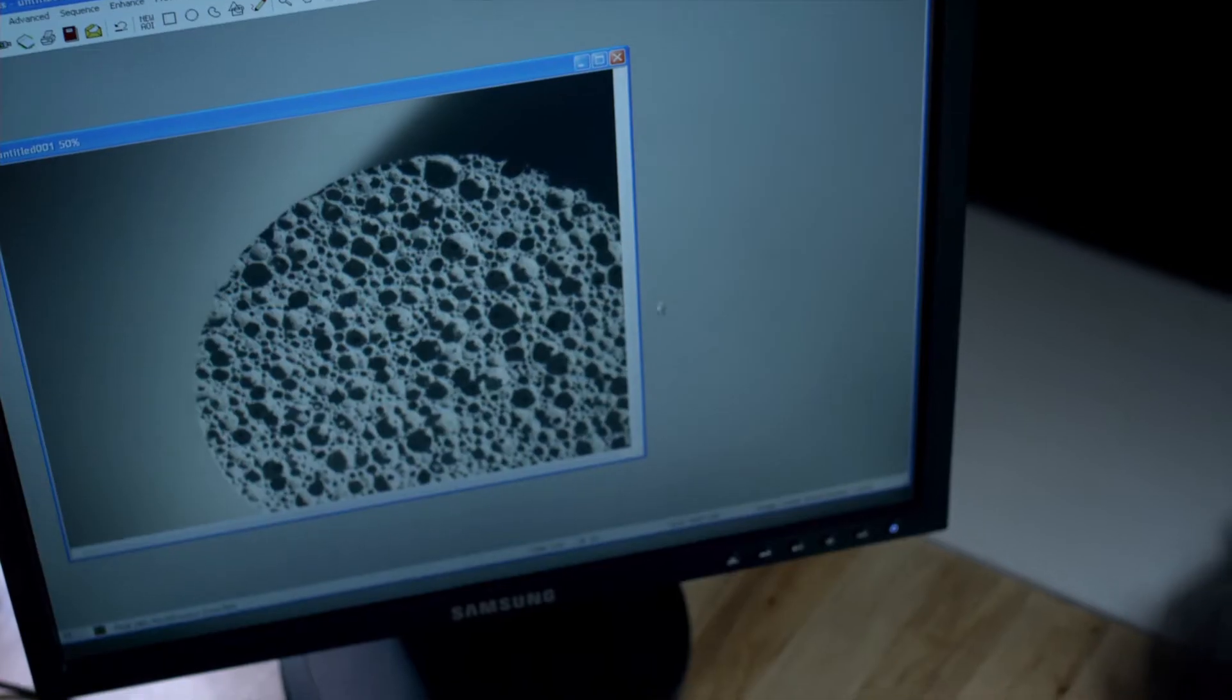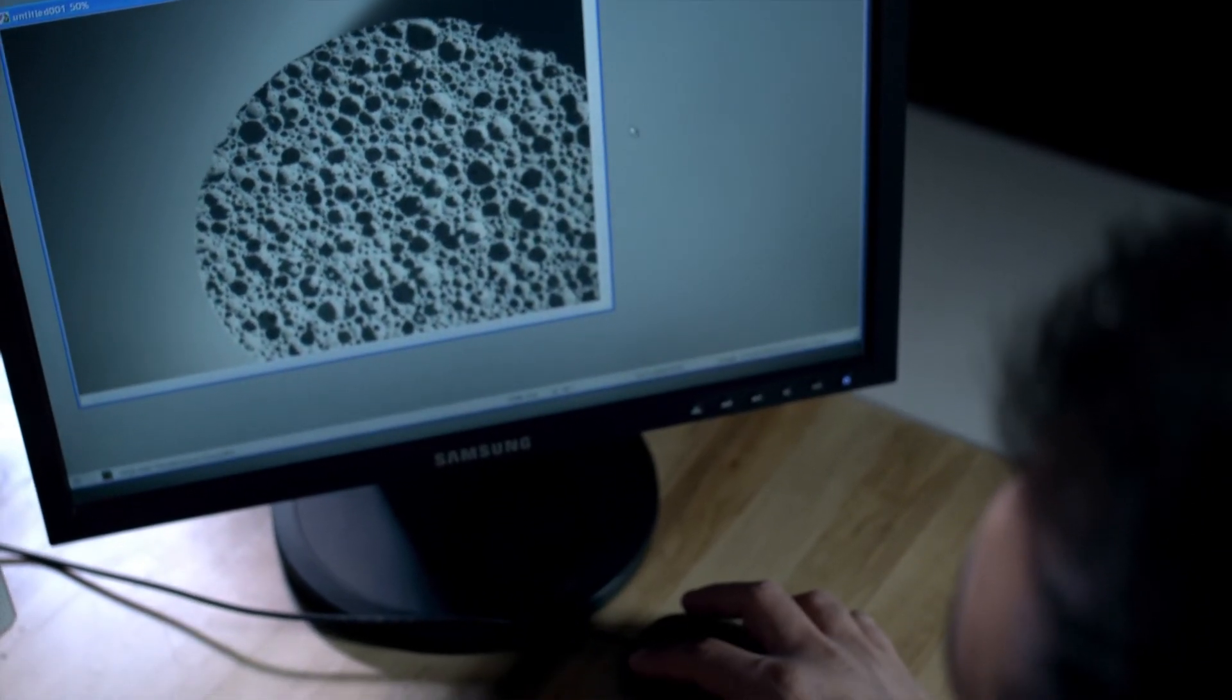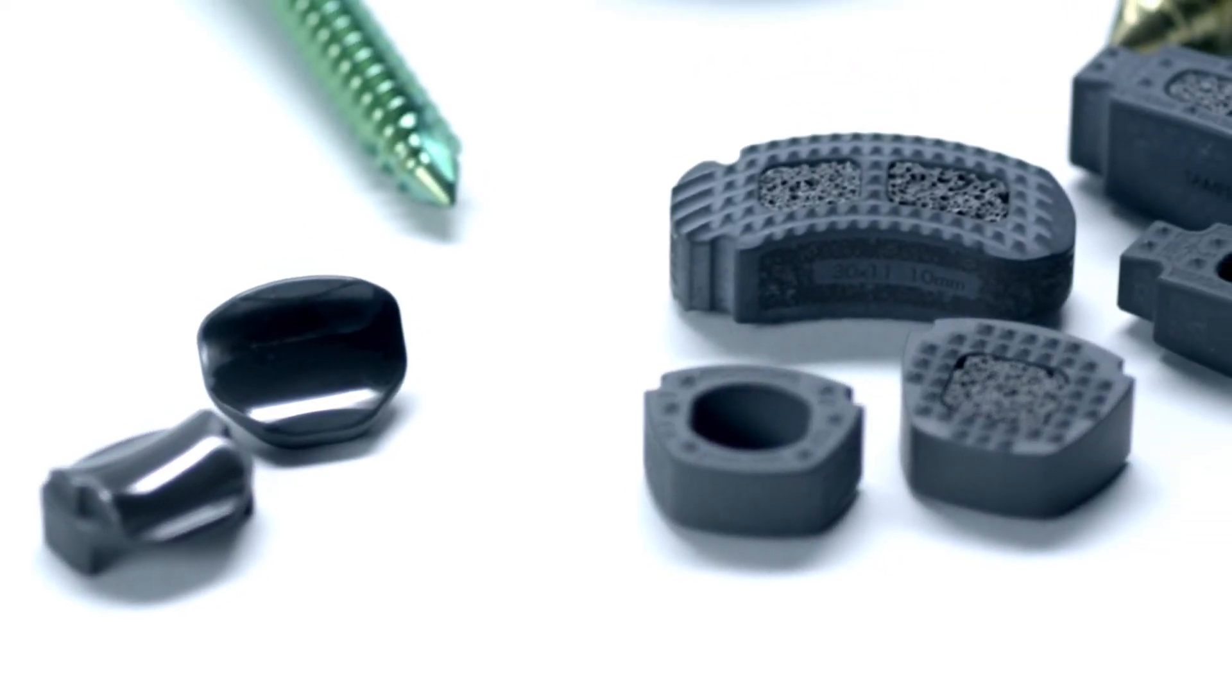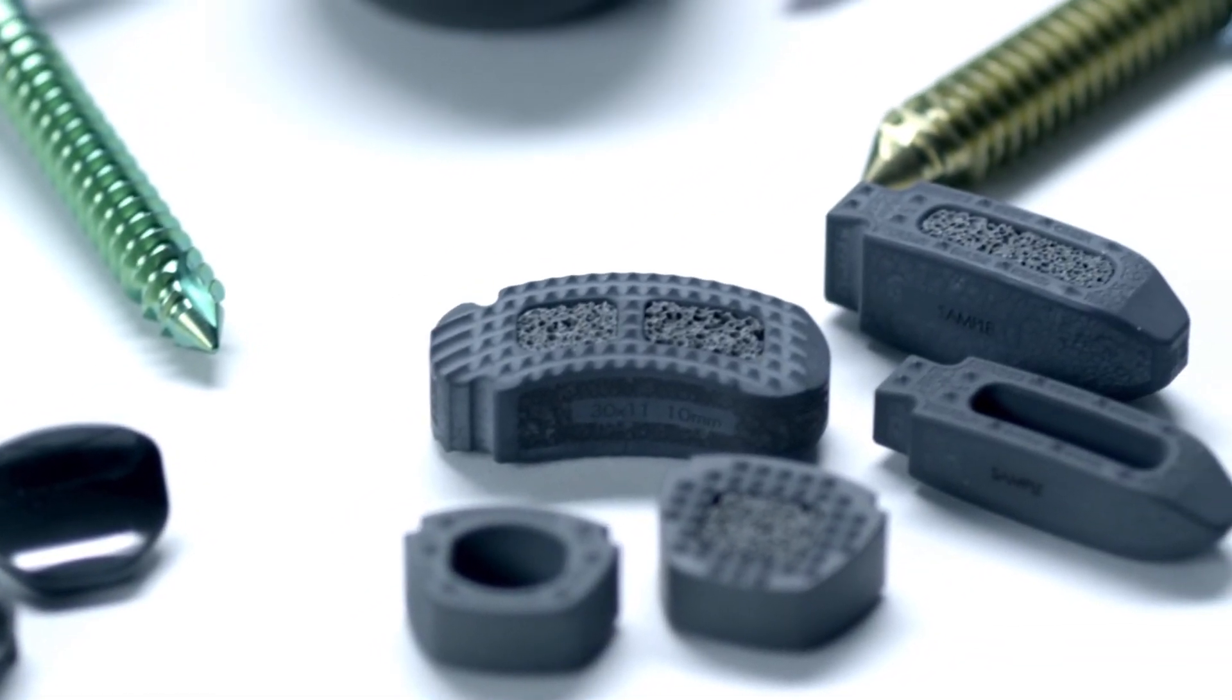So when we first started talking about silicon nitride, what was very unique about this substance was that you could make it into a porous structure that bone could grow right into, or you could make it into a very smooth structure that could be a bearing surface with virtually no wear. And the same substance could be both sides of that.